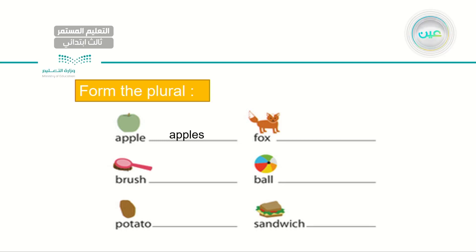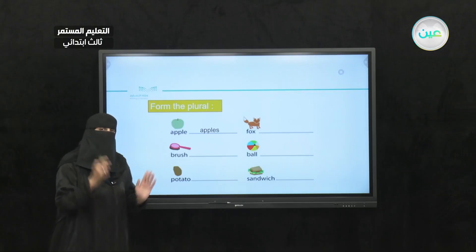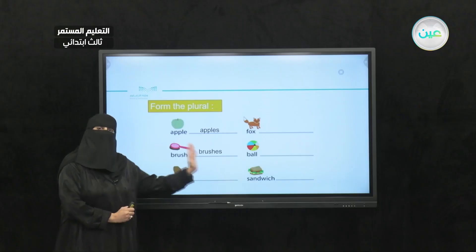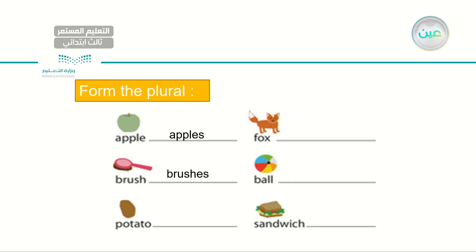How about brush? Brush ends in S and H. If we have a word that ends in S and H, we need to add E-S: brushes. Next, I have potato — potato is a singular, just one potato. If we need to make it plural, we need to add E-S because this word ends in O: potatoes. Like the word tomato — tomatoes, we add E-S.